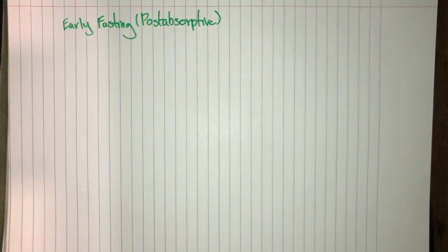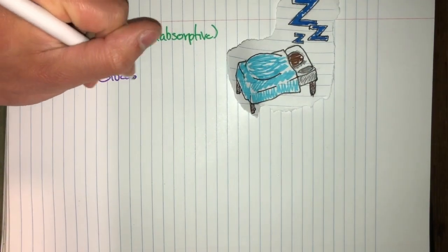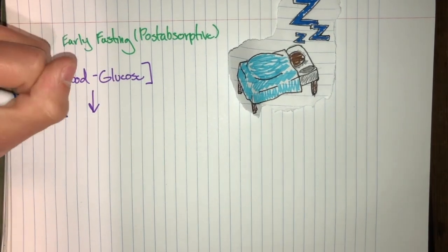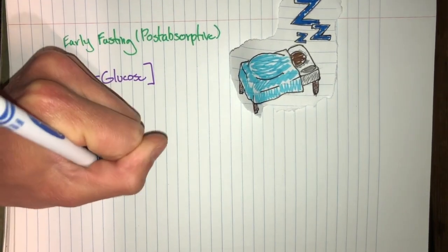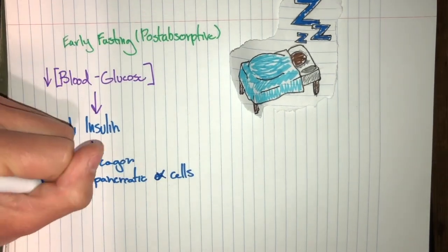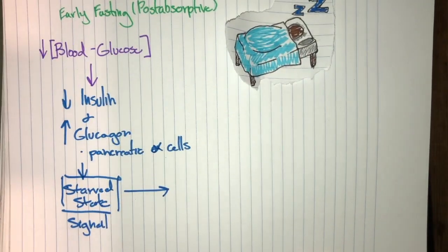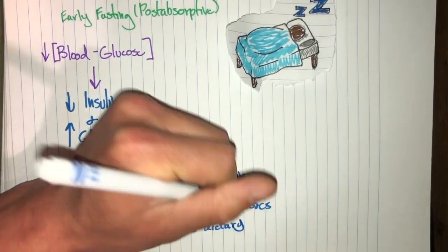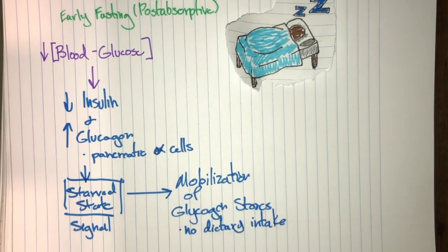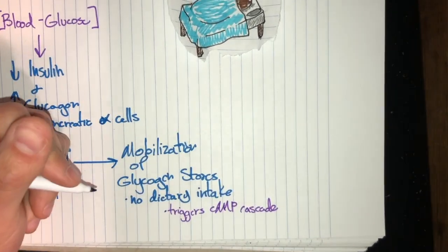During the early fasting state, also known as the post-absorptive state, blood glucose concentrations can decrease, being that we're not taking in anything. So we see a decrease in insulin and an increase in glucagon secretion by the pancreatic alpha cells. Their main target is actually the liver, and this also signals the starved state. The glucagon signals that starved state, which then mobilizes the glycogen stores for breakdown and inhibits glycogen synthesis by triggering the cAMP cascade.